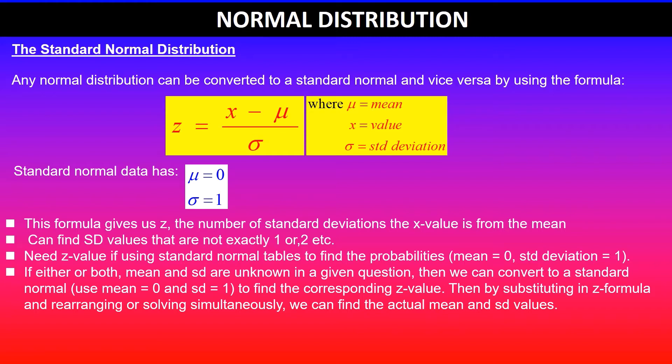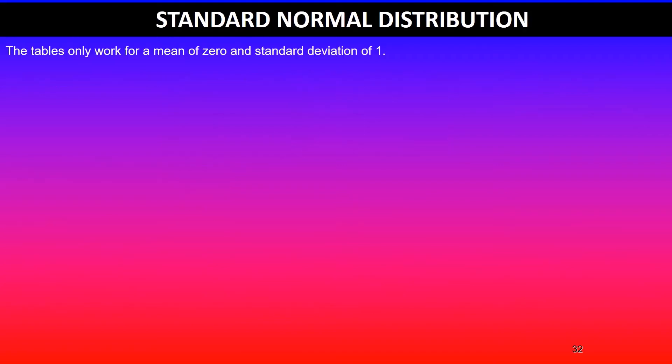Then by substituting this in the formula and rearranging or solving it simultaneously, you will be able to find the actual mean and standard deviation of the problem that's presented in context. So in summary, tables only work for a mean of 0 and standard deviation of 1.